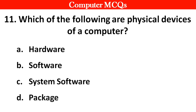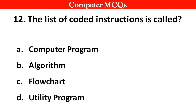Next question. Which of the following are physical devices of a computer? Options A: Hardware, B: Software, C: System software, D: Package. Right answer is option A: Hardware.